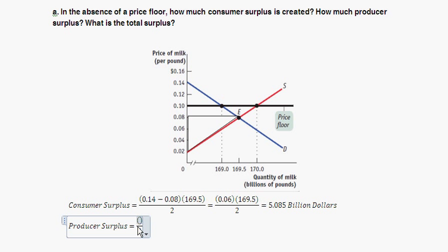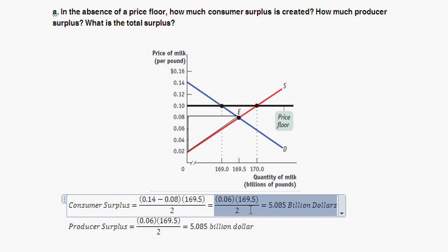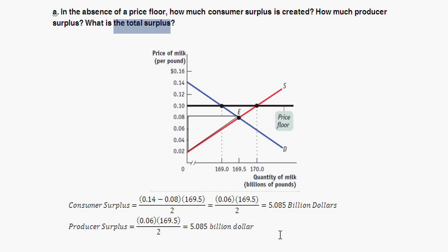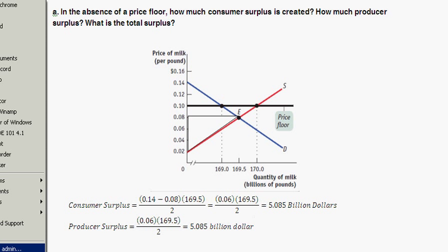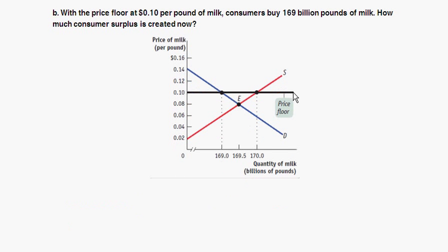Using the triangle formula: the height is 0.08 minus 0.02, which is 0.06, and the base is 169.5 billion. That gives us the same calculation as before: 5.085 billion dollars in producer surplus. So both consumer surplus and producer surplus are 5.085 billion dollars, and the total surplus is approximately 10.17 billion dollars.